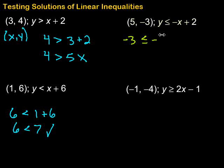so negative 5 plus 2, simplify, we get negative 3 is less than or equal to negative 5 plus 2, that would be negative 3. Negative 3 is less than or equal to negative 3, that's true because they're equal to each other.